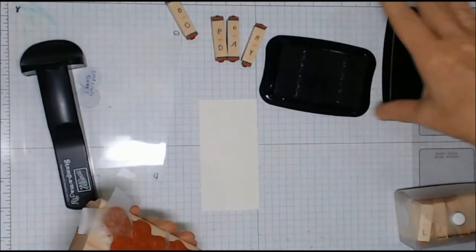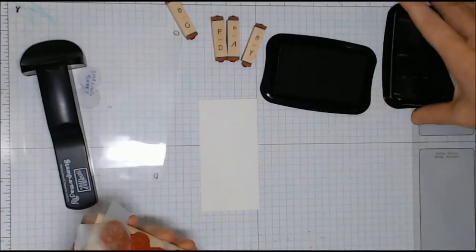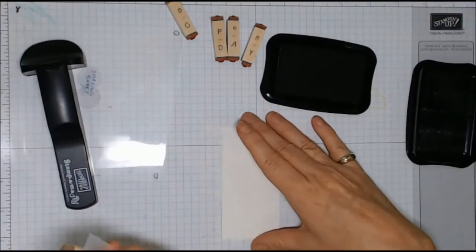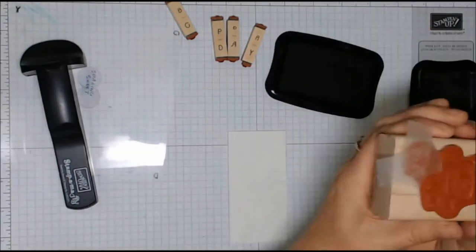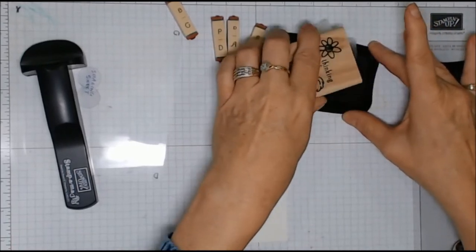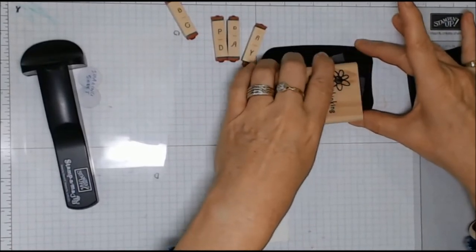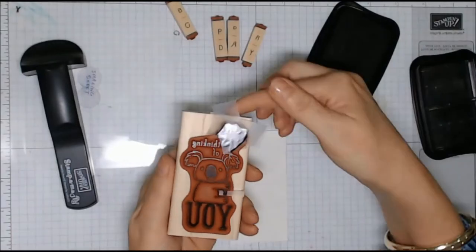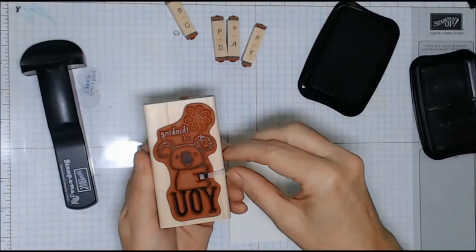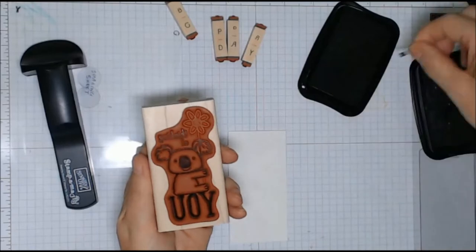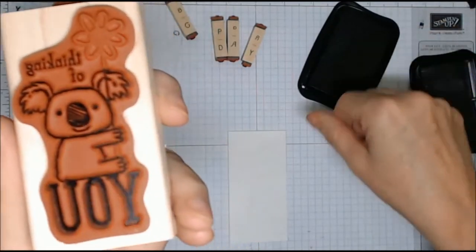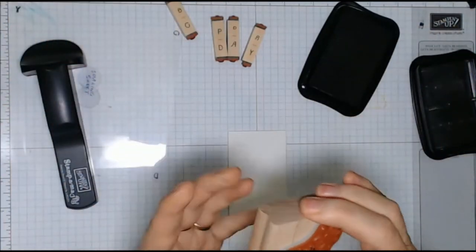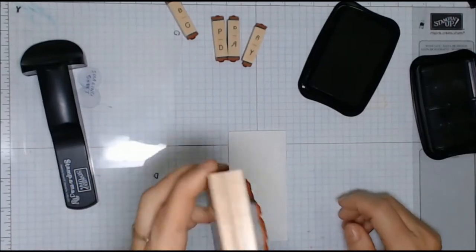So you can see those are the pieces that won't be inked. Use StazOn for this project because it is watercolour paper and this is the right ink to be using on watercolour. So ink that up, and all you really need to remember here is to take off that messy sticky tape before you press it down. It would be quite a disaster if you forgot to take that off. Once that's off, just stamp that onto your watercolour paper.